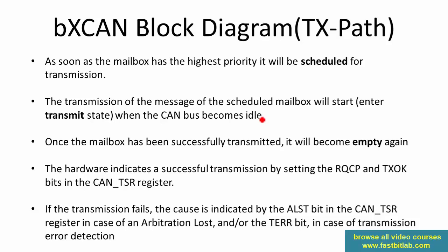The transmission of the scheduled mailbox will start when the CAN bus becomes idle. The CAN controller must see 11 recessive states on the bus in order to conclude the bus is idle. This actually happens because of the end of frame and the IFS section of the CAN protocol — all are recessive.